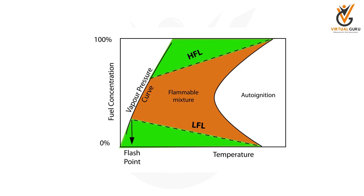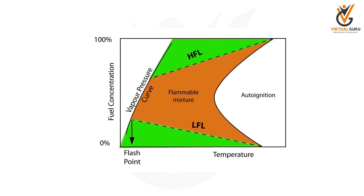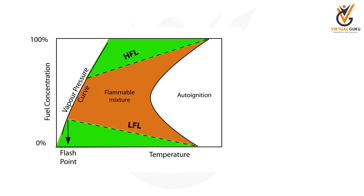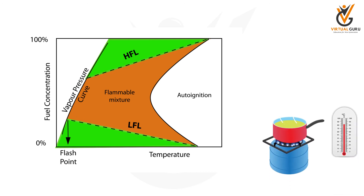The next property is flashpoint of a substance which can burn. This is the minimum temperature where the substance can become a vapor and mix with air, at which point it can give flash fires.